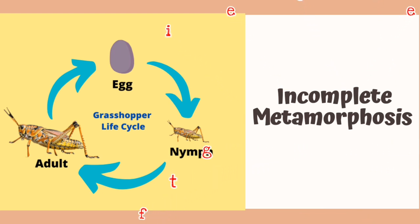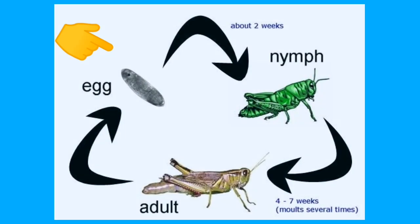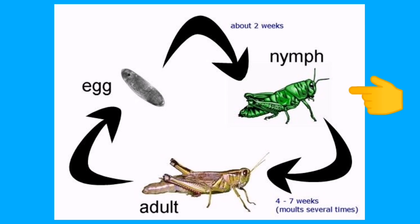Example: the grasshopper. The first stage starts with eggs — an adult grasshopper lays its eggs. The second stage is nymphs. Young grasshoppers called nymphs hatch from eggs. They look like adult grasshoppers except they don't have wings yet. As a nymph grows, it sheds its skin several times before it becomes a fully grown adult.